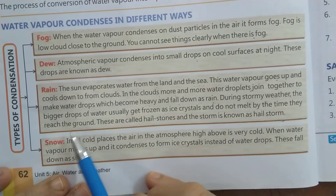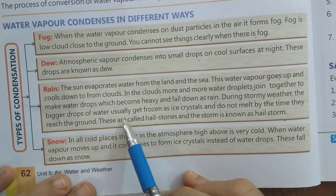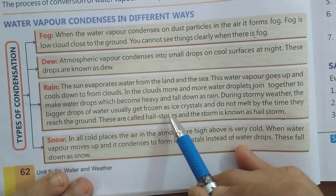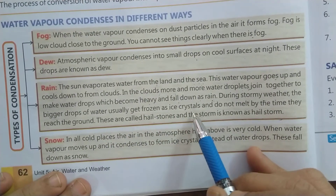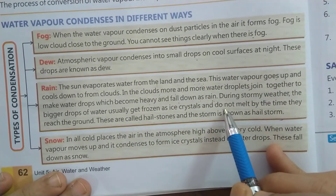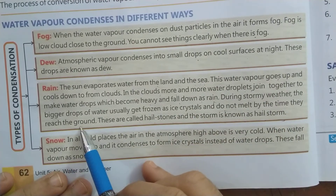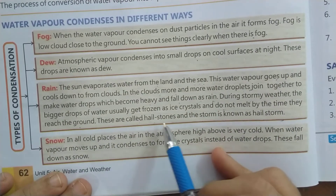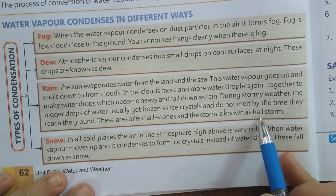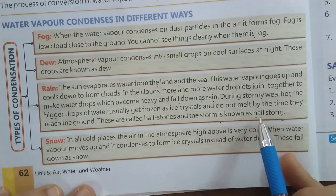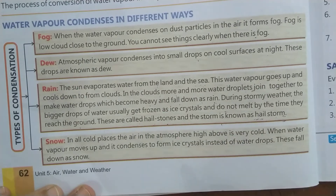जब weather बहुत stormy होता है — मतलब तेज़ आंधी आती है — तो बड़े-बड़े water के drops होते हैं। वे frozen हो जाते हैं, मतलब इतने ठंडे हो जाते हैं कि ice के crystals बन जाते हैं। वे जमीन पर आने तक melt नहीं हो पाते और hailstones के रूप में नीचे गिरने लगते हैं — जिसे हम बोलते हैं ओला। आंधी चलती है तो ओले गिरते हैं — वो होता है hailstone।